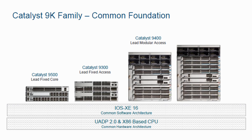The 9K family includes the 9500 as a fixed core, the 9300 as a fixed access layer switch, the 9400 as a modular chassis, and the 9200 as a replacement for the 2960X and XR. These 9K switches, with a DNA Advantage or Essentials subscription, are platform-ready for network automation and assurance migration.